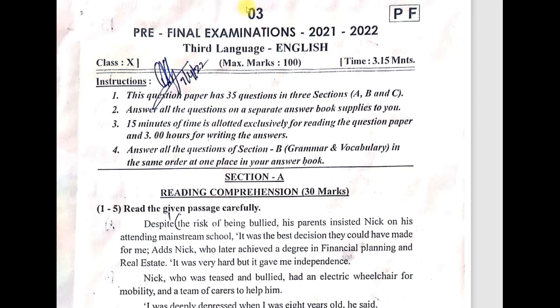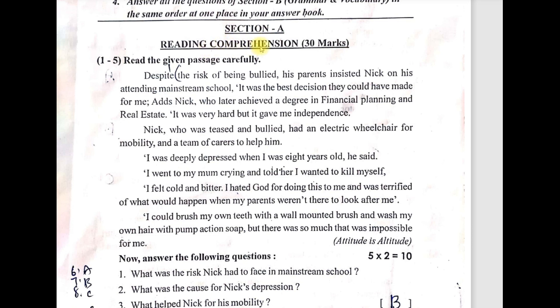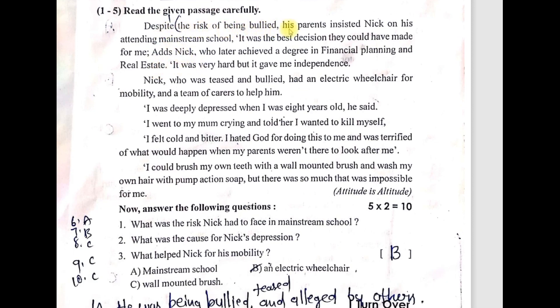In Section A, reading comprehensions are given for 30 marks. Questions 1 to 5 are from the reading passage. This passage is taken from readings across all five units — the last unit, Unity and Diversity, is deleted due to lack of time because of COVID. So from units 1 to 5. The paragraph given here is from 'Attitude is Altitude,' which is from the first unit.